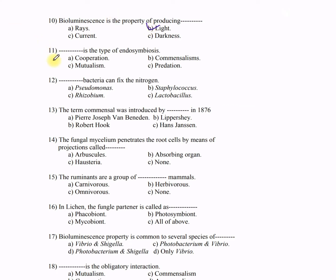Question 11: Dash is the type of endosymbiosis — A) cooperation, B) commensalism, C) mutualism, D) predation. The correct answer is C — mutualism.